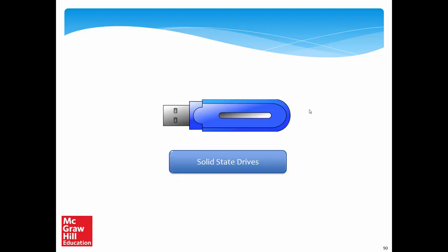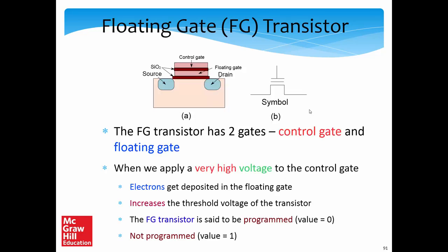The third category of drives is solid state drives, or flash drives, used in pen drives and USB sticks, which are very common today. The crux of all these technologies is a new kind of logic gate called a floating gate transistor. It looks similar to a regular NMOS or PMOS transistor but has two gates: a control gate and a floating gate. There is an SiO2 layer and the gate structure differs from a typical NMOS transistor.